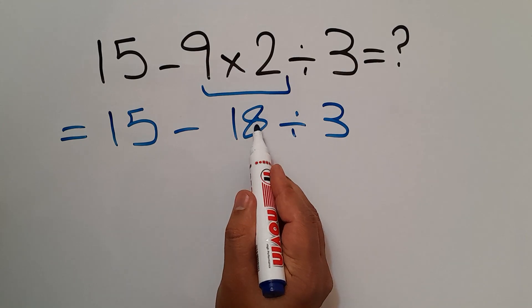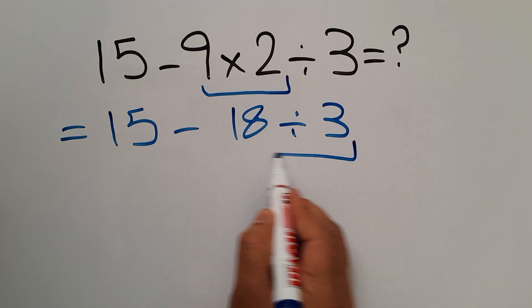Now, we have to handle this division. 18 divided by 3 gives us 6.